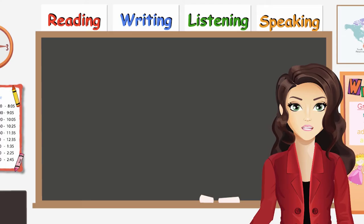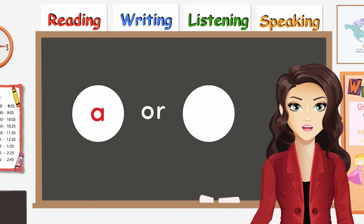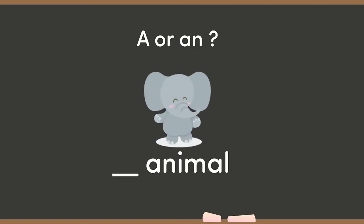Now it's your turn to practice. Is it A or AN? Can you fill in the blank for me? That's it. AN animal.